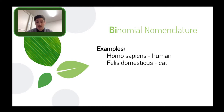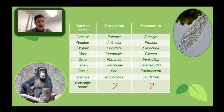The genus is capitalized, which is the first word, and the species is not, but both are always in italics. So we have Homo sapiens — Homo is the genus, sapiens is the species, and that is us humans. We also have Felis domesticus, which is a cat. It's a bit of a tongue-twisting language, but as long as you understand the words, don't panic about pronouncing it.